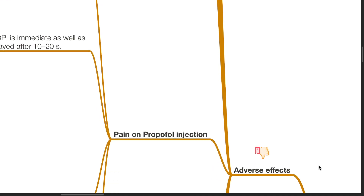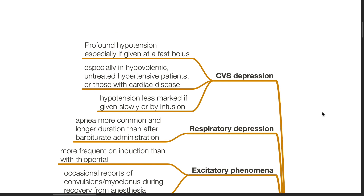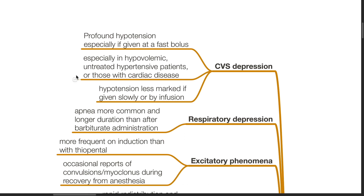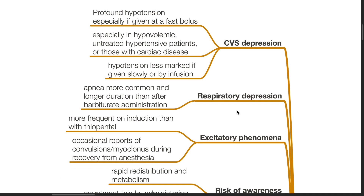Adverse effects of propofol: Propofol causes cardiovascular depression. Profound hypotension can occur, especially if given as a fast bolus, particularly in hypovolemic, untreated hypertensive patients, or those with pre-existing cardiac disease. Hypotension is less marked if given slowly or by infusion. Propofol can cause respiratory depression, and apnea is more common and of longer duration than after barbiturate administration.